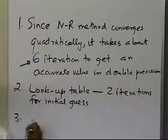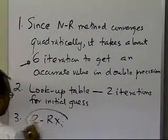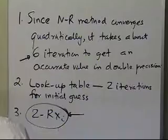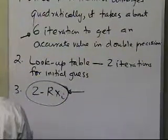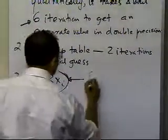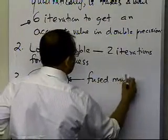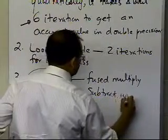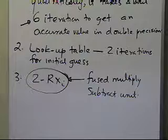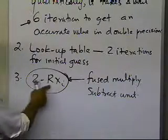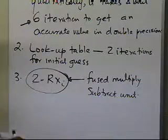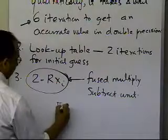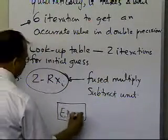Other things which people do is for 2 minus R times xi, which is in my formula, they will have something which is called a fused multiply subtract unit. So you can have a fused multiply subtract unit, which does this operation specifically for dividing or finding the inverse of a number, and that also can make the process computationally efficient. In the next segment we'll take an example, but this is the end of this segment.